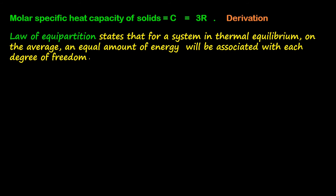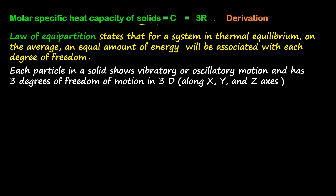In a thermodynamic system, particles in a solid, liquid, or gas are in constant motion, but the type of motion differs across physical states — particles have different degrees of freedom. For solids, each particle shows vibratory or oscillatory motion. They cannot show translational motion or move from one location to another. Solids vibrate along the three coordinates x, y, and z, giving three degrees of freedom.